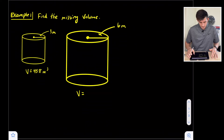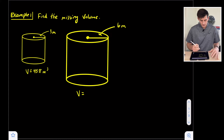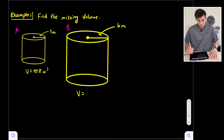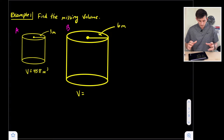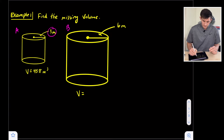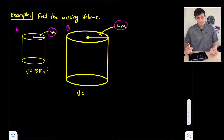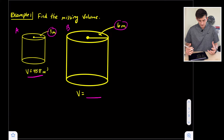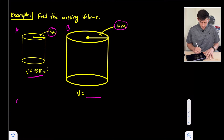We'll look at two examples. The first one, we have a couple of cylinders and we want to find the missing volume. We'll call this cylinder A and cylinder B — a small cylinder and a large cylinder. The radius of cylinder A is 3 meters, the radius of cylinder B is 6 meters. The volume of cylinder A is given to us, and we do not have the volume of cylinder B. So we want to go ahead and find K, our scale factor.